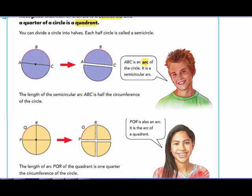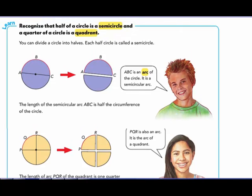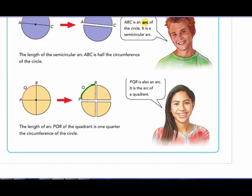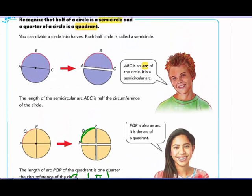What about semicircles and quadrants? A semicircle is half of a circle — half of a circular arc. A quadrant is a quarter of a circular arc. To find the circumference of a quarter circle, put one-quarter in front of the formula: circumference equals one-quarter times π times diameter. For half a circle: circumference equals one-half times π times diameter. We'll leave the last part of the notes to do in class, and that's it for today's video.